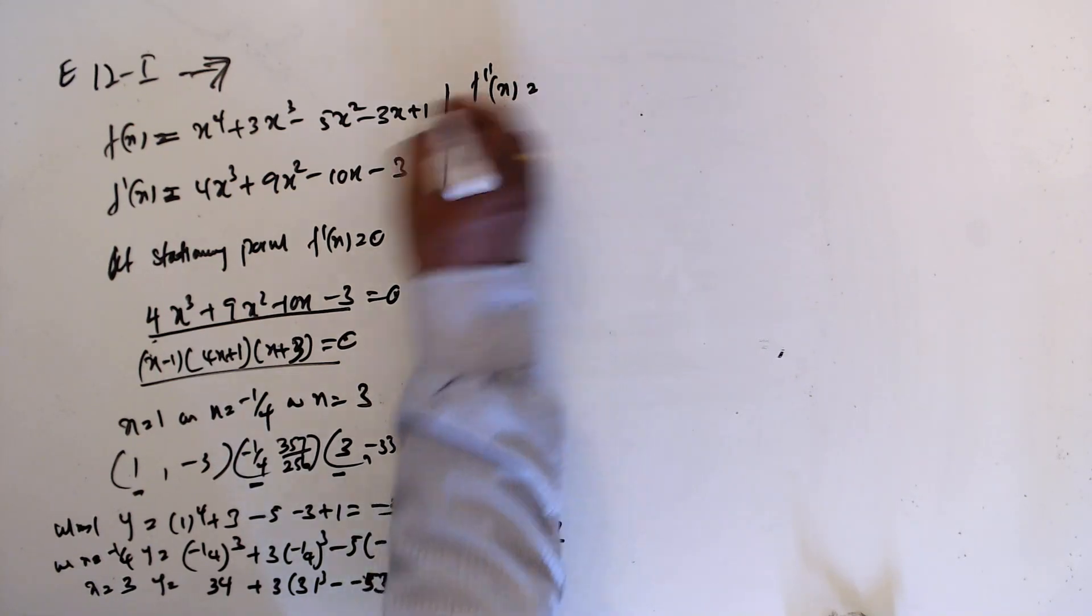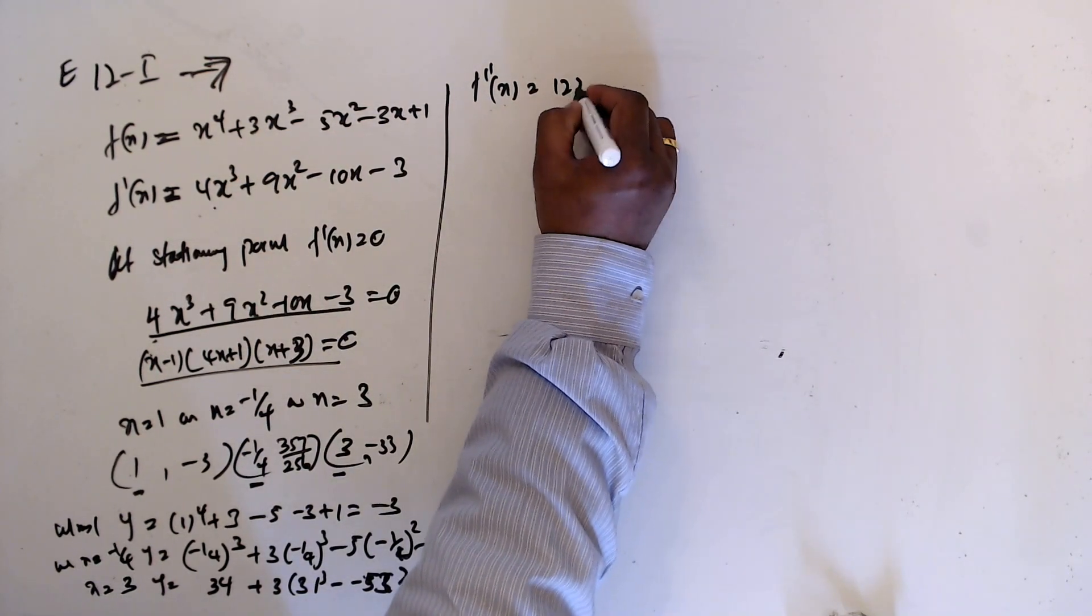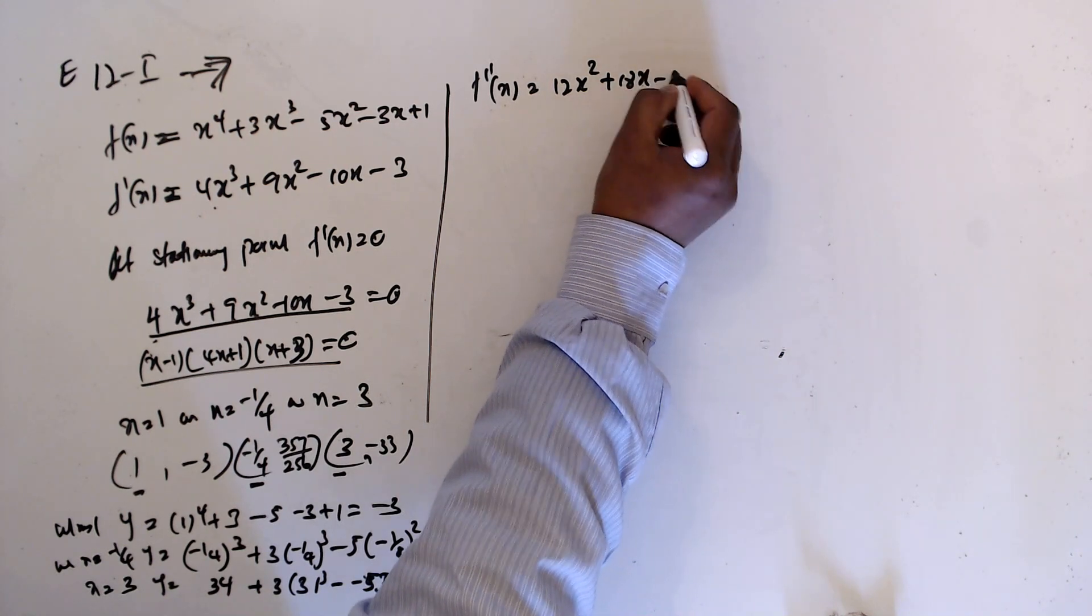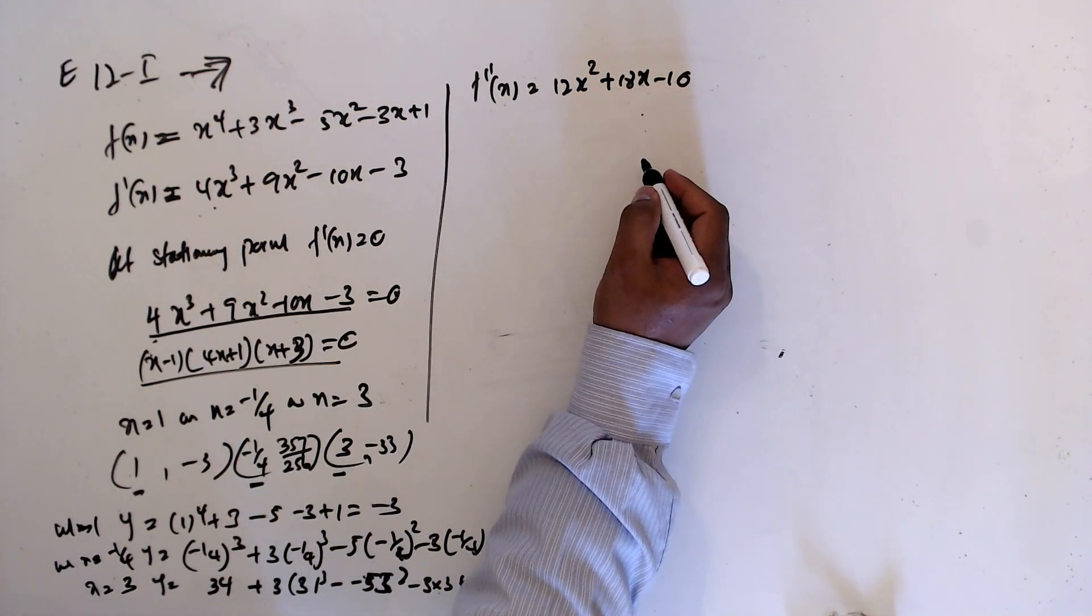f double prime x is 12x^2 plus 18x minus 10.